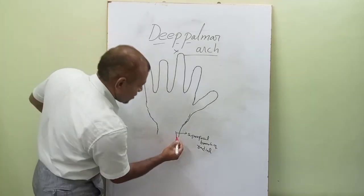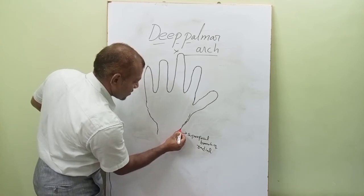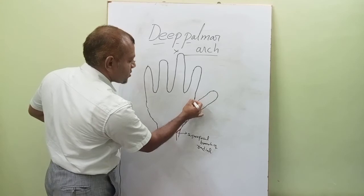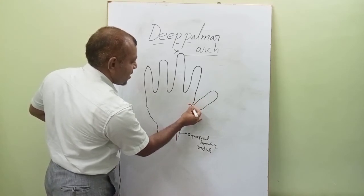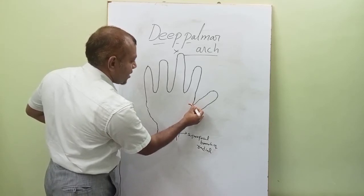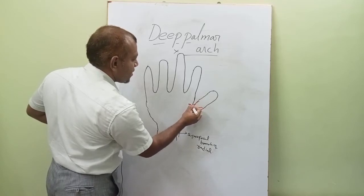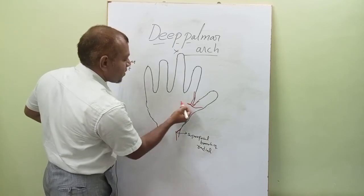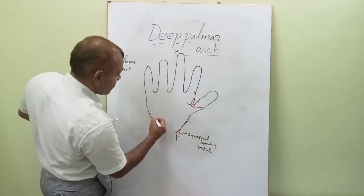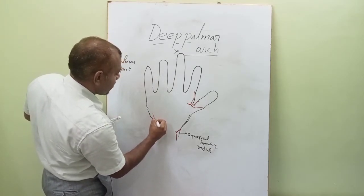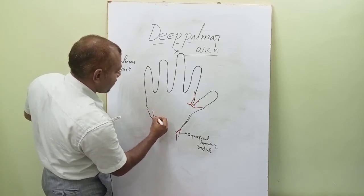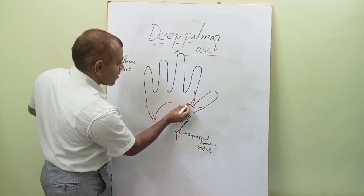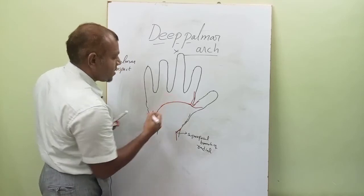The main trunk of the radial artery runs posteriorly and enters the anatomical snuff box, then passes through the two heads of the first dorsal interosseous and enters the hand. Once in the hand, it gives branches: arteria princeps pollicis and arteria radialis indicis. It then runs medially and communicates with the deep branch of the ulnar artery to form the deep palmar arch.